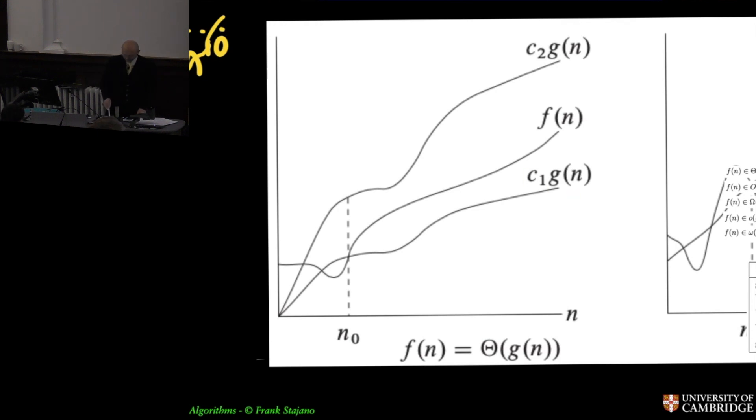So regardless of what happens at the beginning, if I can say that from some point onwards, from some point onwards it is always the case that f of n is contained between g of n multiplied by a constant and g of n multiplied by another constant.